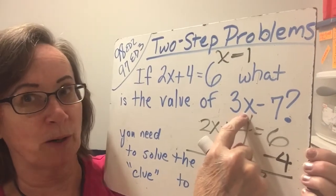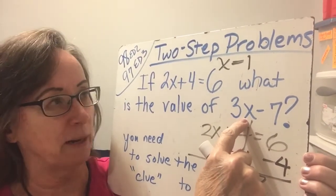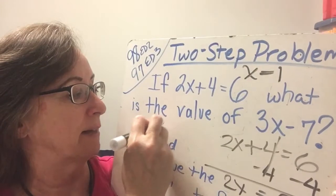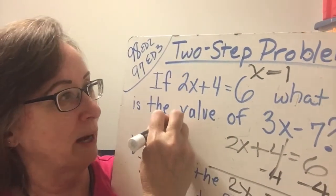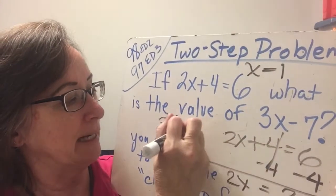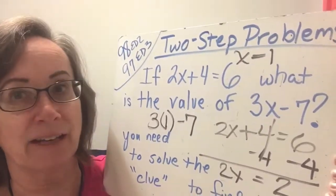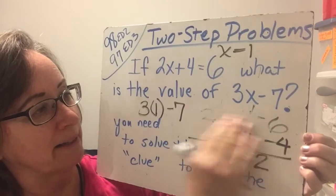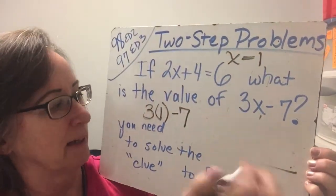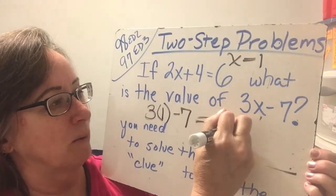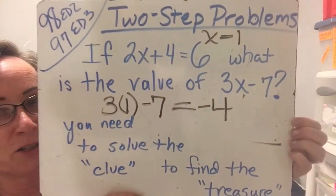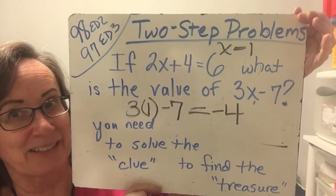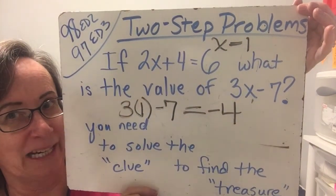And now we go to the part that we're really trying to figure out. This is the answer to the question, but we can't get to it unless we solved the clue. So 3 times 1, let's write it out: 3 times 1, because that's what the x is, minus 7. And that's going to be 3 take away 7 is negative 4. So the answer to the first one is negative 4. We'll write negative 4 was the answer to the question that we were trying to find. That was the treasure that we were trying to find was solving that. So that is your first little example.